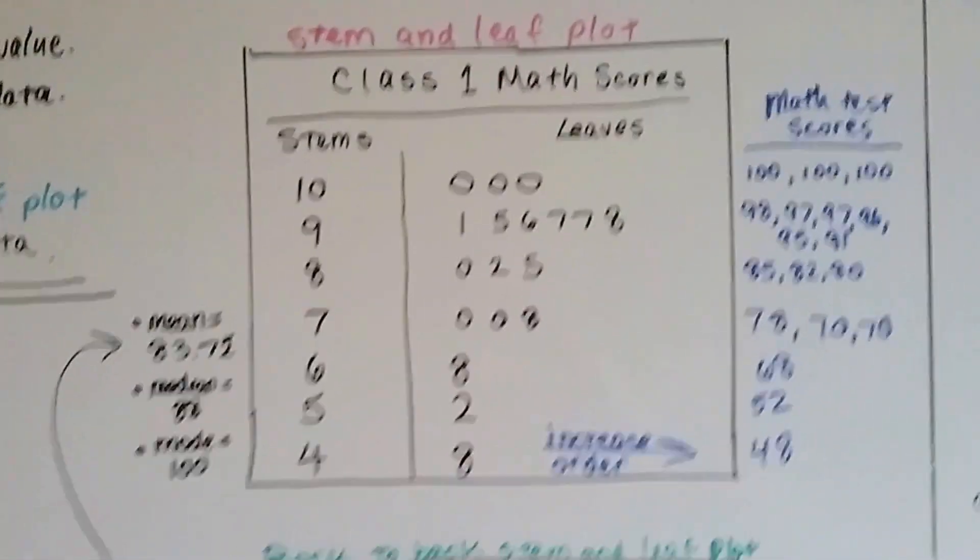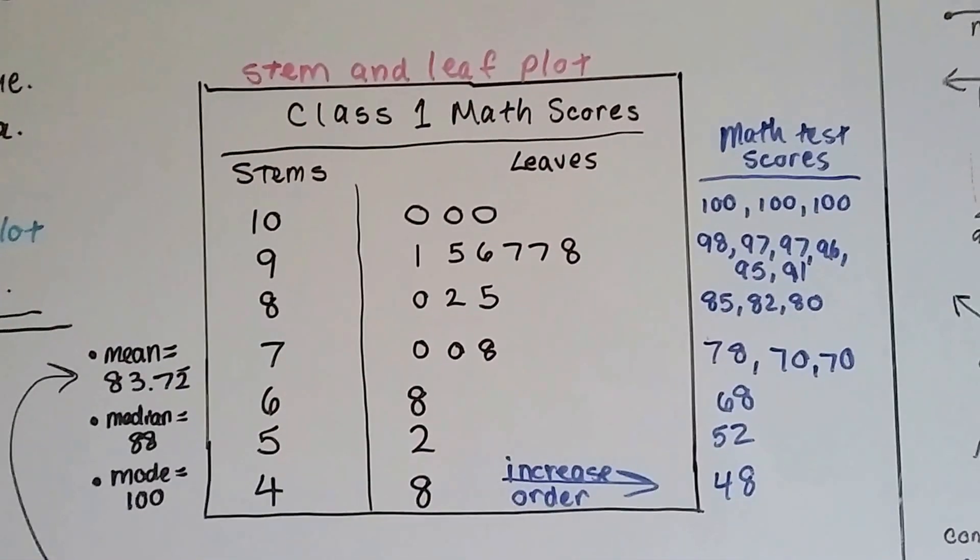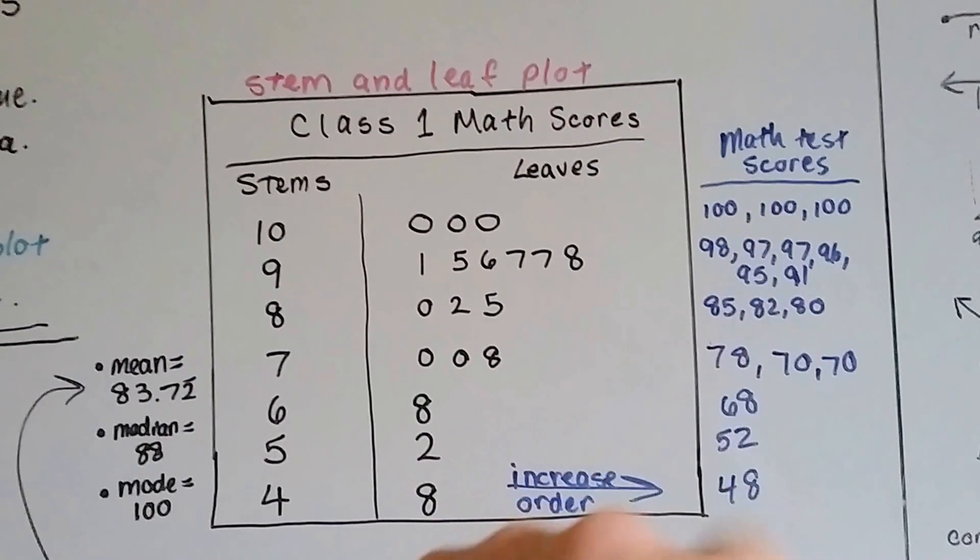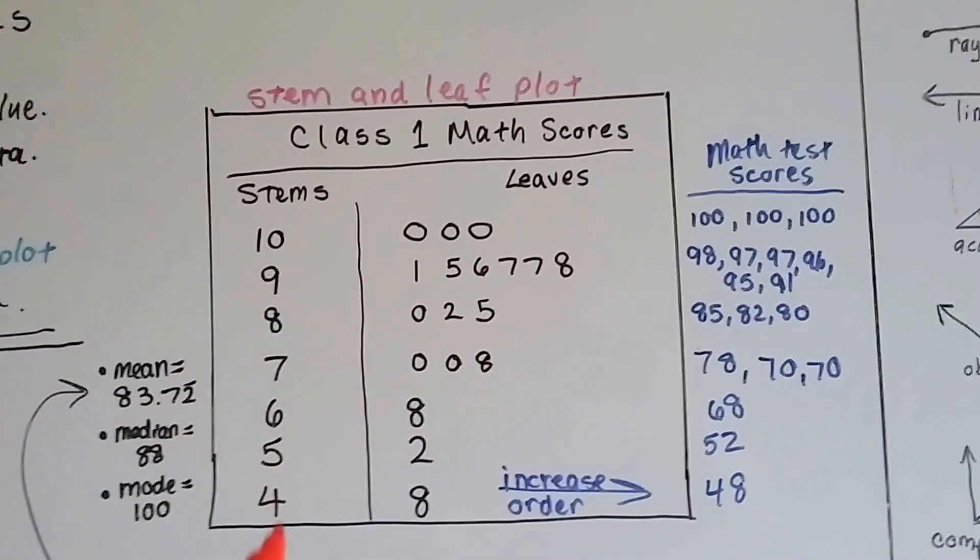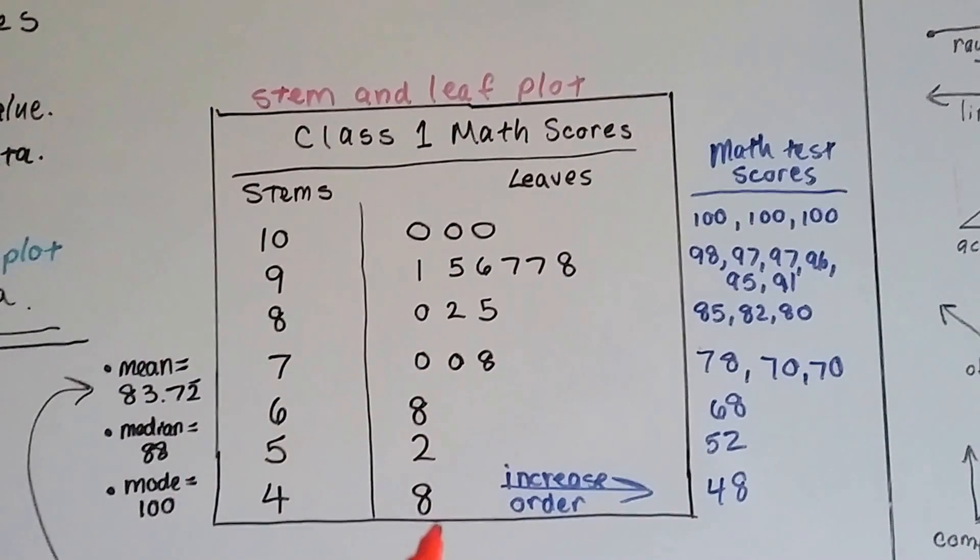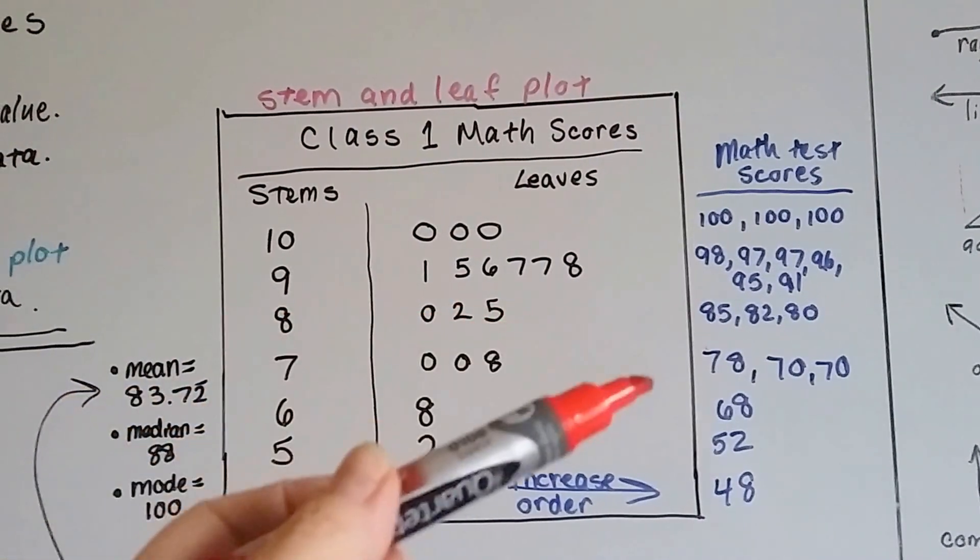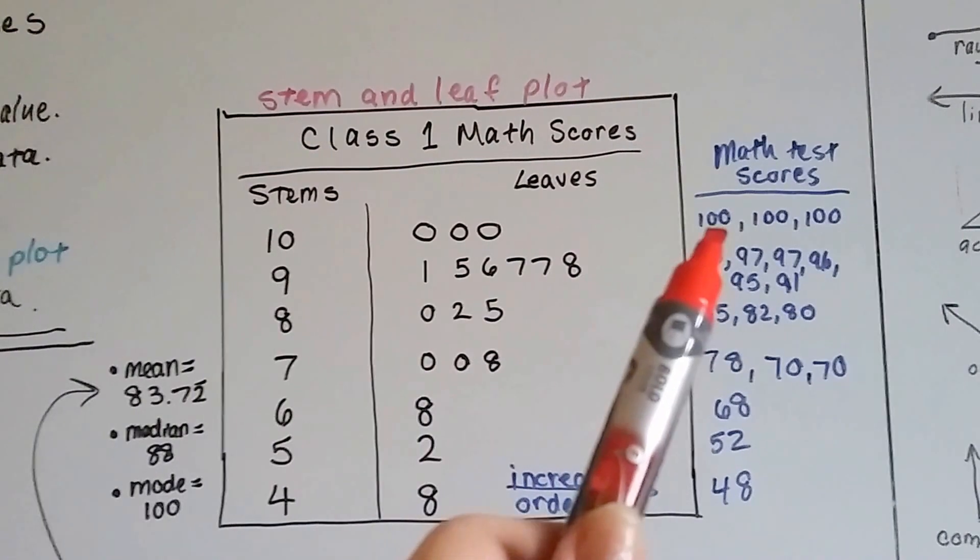So now to look at a stem and leaf plot for class one, here is their math scores right here. So what the teacher did was she wrote the hundreds and tens place as the stems, or the tens place, and then the ones place as the leaves in ascending order going away from the stems.